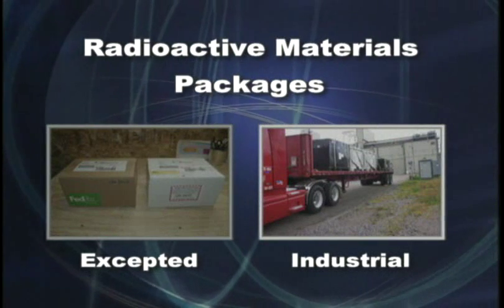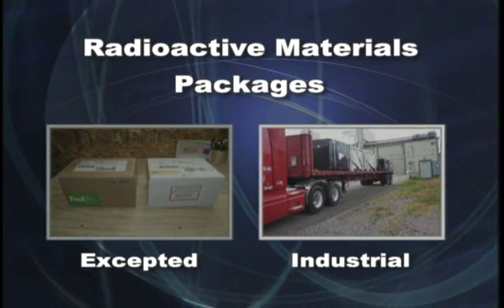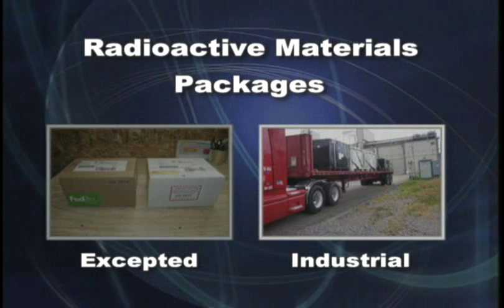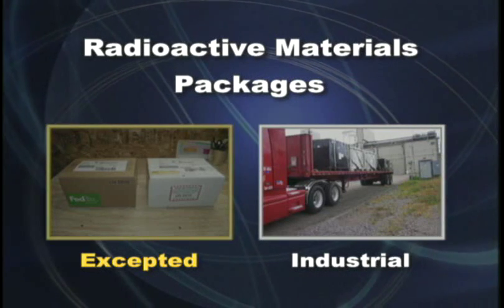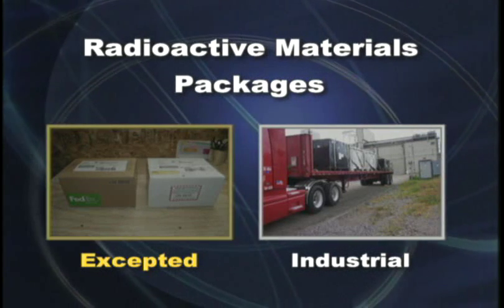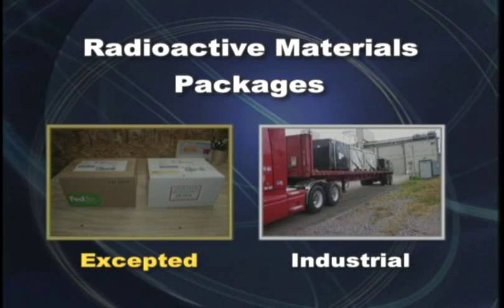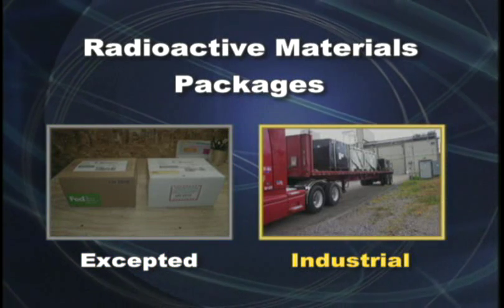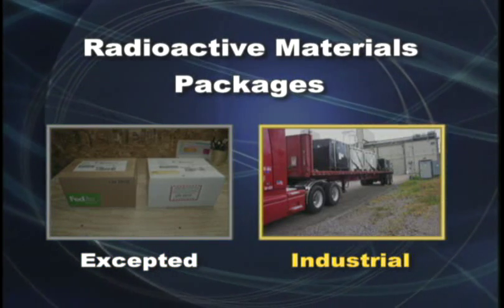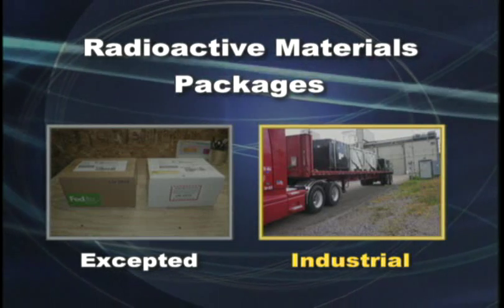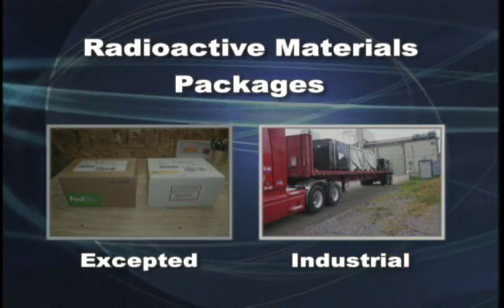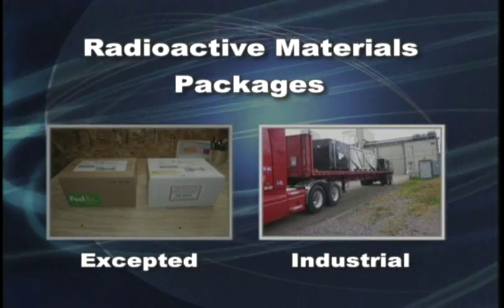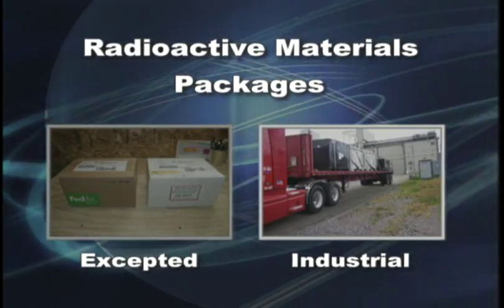The first types of radioactive materials packages are excepted packaging and industrial packaging. Excepted packages are used to ship very low levels of radioactive materials. Industrial packages are used to ship things such as radioactive waste. Both of these package types will contain non-life-endangering amounts of radioactive material.